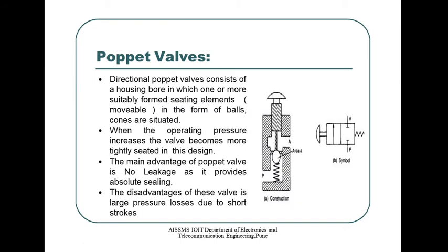Poppet valves: a directional poppet valve consists of a housing bore in which one or more suitably formed seating elements in the form of balls, discs, or cones are situated. When the operating pressure increases, the valve becomes more tightly seated in this design. The main advantage of a poppet valve is no leakage, as it provides absolute sealing. The disadvantage of this valve is large pressure loss due to the short stroke operation.